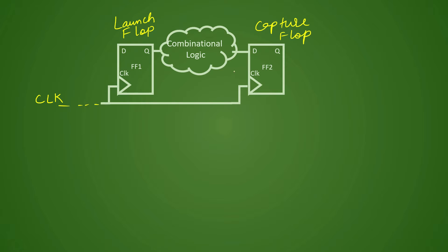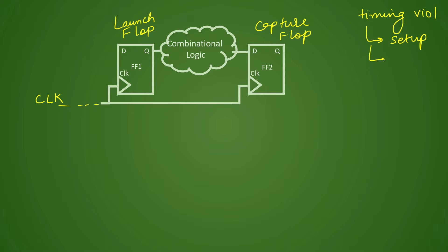In this typical timing path, we will try to understand that there are two types of violations in timing. The major two types of violations are setup timing violation and hold timing violation.